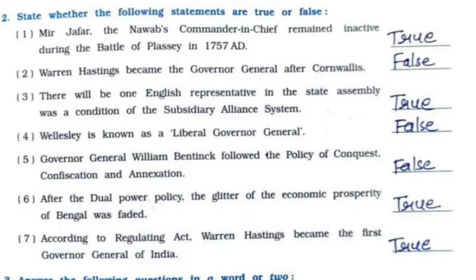First: Mir Jafar, the Nawab's commander-in-chief, remained inactive during the Battle of Plassey in 1757 AD — it is True. Second: Warren Hastings became the Governor General after Cornwallis — it is False.